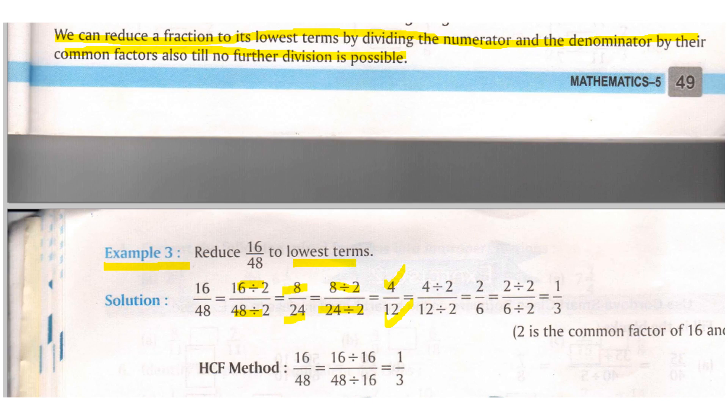Now again you can see that these numbers are divisible by 2. So 4 divided by 2 is a 2 and 12 divided by 2 is a 6. Now 2 by 6 can further be reduced to 1 by 3. Now 1 by 3 can't be reduced. So you will write that the reduced form of 16 by 48 is 1 by 3.